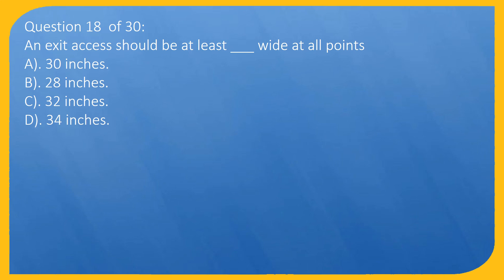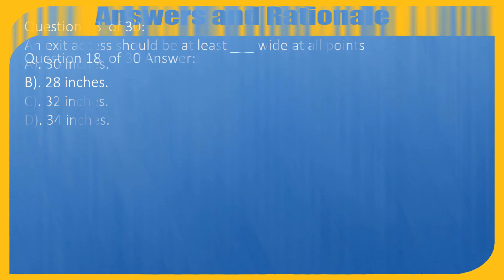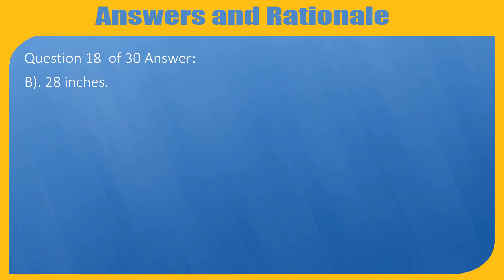Question 18 of 30: An exit access should be at least how wide at all points? A. 30 inches, B. 28 inches, C. 32 inches, D. 34 inches. Answer: B. 28 inches.